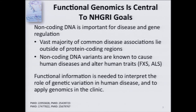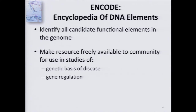Functional genomics is central to NHGRI goals, in part because noncoding DNA is very important for disease and gene regulation. The vast majority of common disease findings and heritability has been reported to lie outside of protein coding regions. For instance, in fragile X syndrome, essentially all of the heritability is found as a noncoding mutation at a single gene. In ALS, a neurological disorder, the largest variant accounts for about 30 percent of the heritability and is a noncoding variant. We don't have a genetic regulatory code like we have for the genetic code, so we need functional genomics experiments to better understand the noncoding portion of the genome.